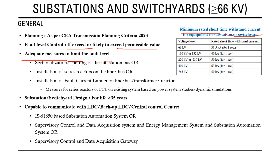The design life of substations and switchyards should not be less than 35 years. The substation should be capable of communicating with the load dispatch center, backup load dispatch center, control center, ISOs, and ASOs. It should be an IEC 61850-based Substation Automation System, or SCADA and EMS system, or a combination of both, with a substation supervisory control and data acquisition gateway for communication with different control centers.